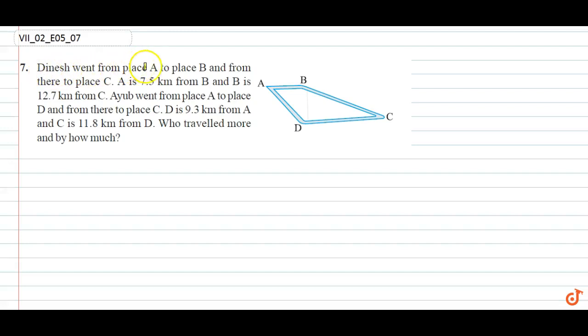The question says Dinesh went from place A to place B and from there he went to place C. A is 7.5 km from B, and B is 12.7 km from C.